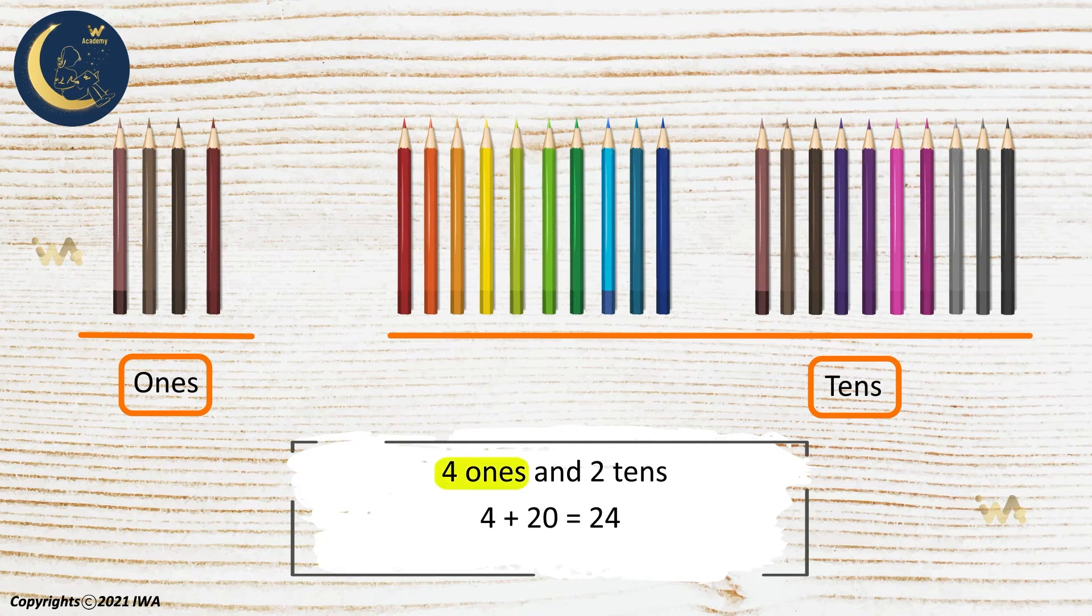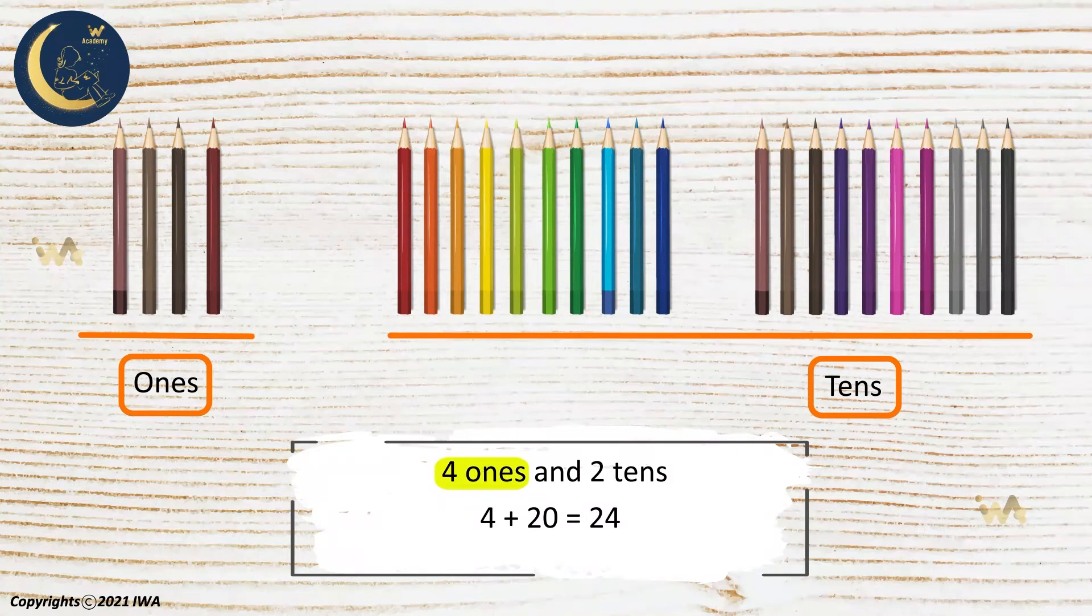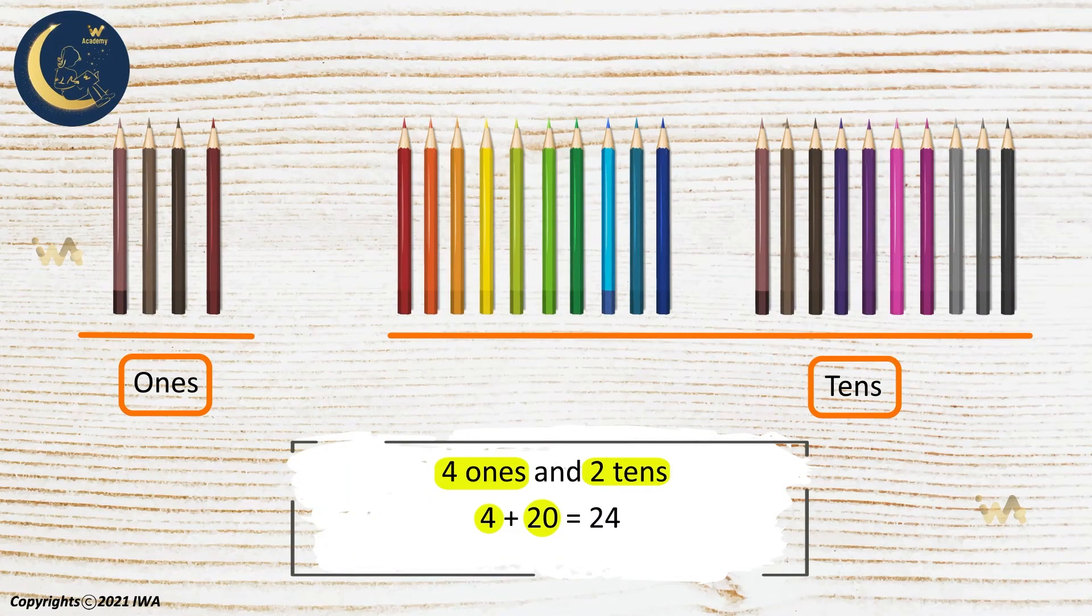Number four stands for the ones and its place value is four, and number two stands for the tens and its place value is 20. This method is called partitioning and it is used to find the place value of numbers.